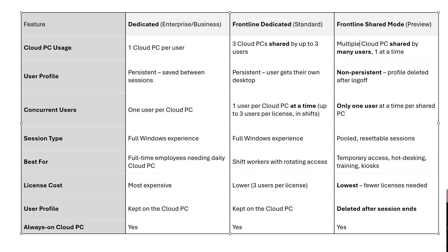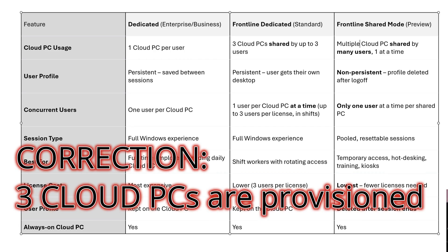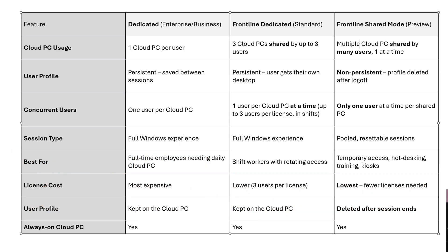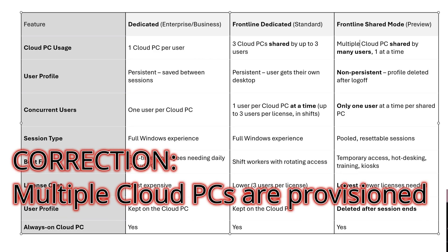So first, Cloud PC users. In Dedicated Mode, you get one Cloud PC per user. In Frontline Standard Mode, you get one Cloud PC shared by up to three users. Whereas in Frontline Shared Mode, it's one Cloud PC shared by many users, one at a time. Within Frontline licenses, we're limited to one Cloud PC shared by up to three users, but Frontline Shared Mode is one PC shared by many users, one at a time - but only one of those users can log on at any one time.